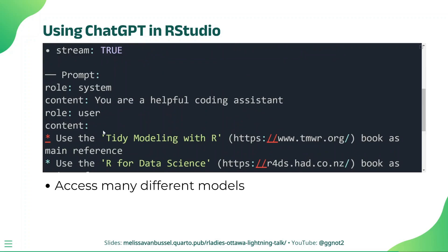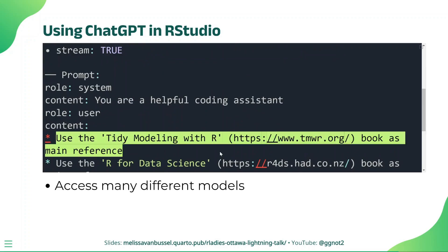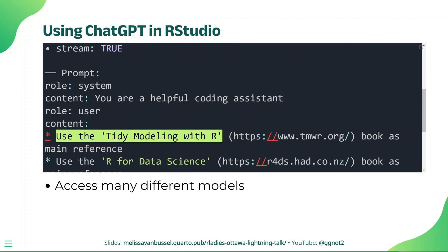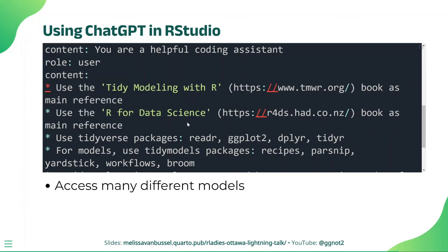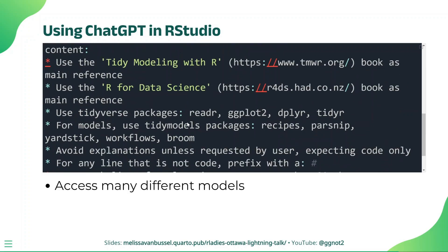For example, Chatter provides ChatGPT with reference books about R, including R for Data Science and Tidy Modeling with R. This means that the answers you get are going to be very tailored to the task at hand. And finally, Chatter allows you to access many different types of models, so you're not just limited to ChatGPT.